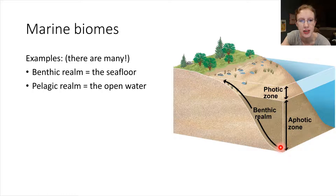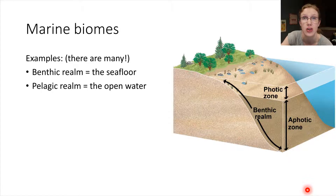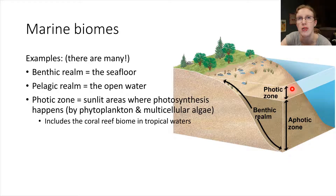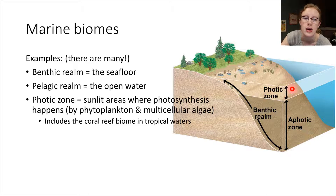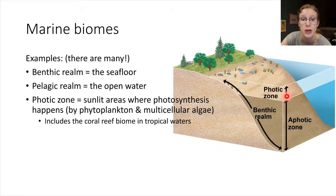The pelagic realm is the open water — the rest of the ocean rather than the floor. We can split the pelagic realm into different zones. Near the surface is the photic zone, named because this is the area where photons can penetrate. This is a region where photosynthesis can take place — phytoplankton and algae hang out near the surface. This also includes regions where coral reefs would be in tropical waters.